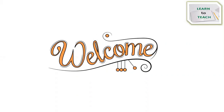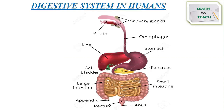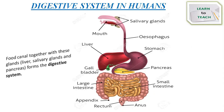Hello everyone, welcome to my channel Learn to Teach. In my previous video I had started with the topic of digestive system in humans, in which we learned that the food we eat passes through the alimentary canal. The alimentary canal is a long, coiled and muscular tube, and the food canal together with glands such as the liver, salivary glands and pancreas form the digestive system. We began learning about the first organ involved in digestion — the mouth with teeth and tongue — and then about the first digestive gland, the salivary gland.